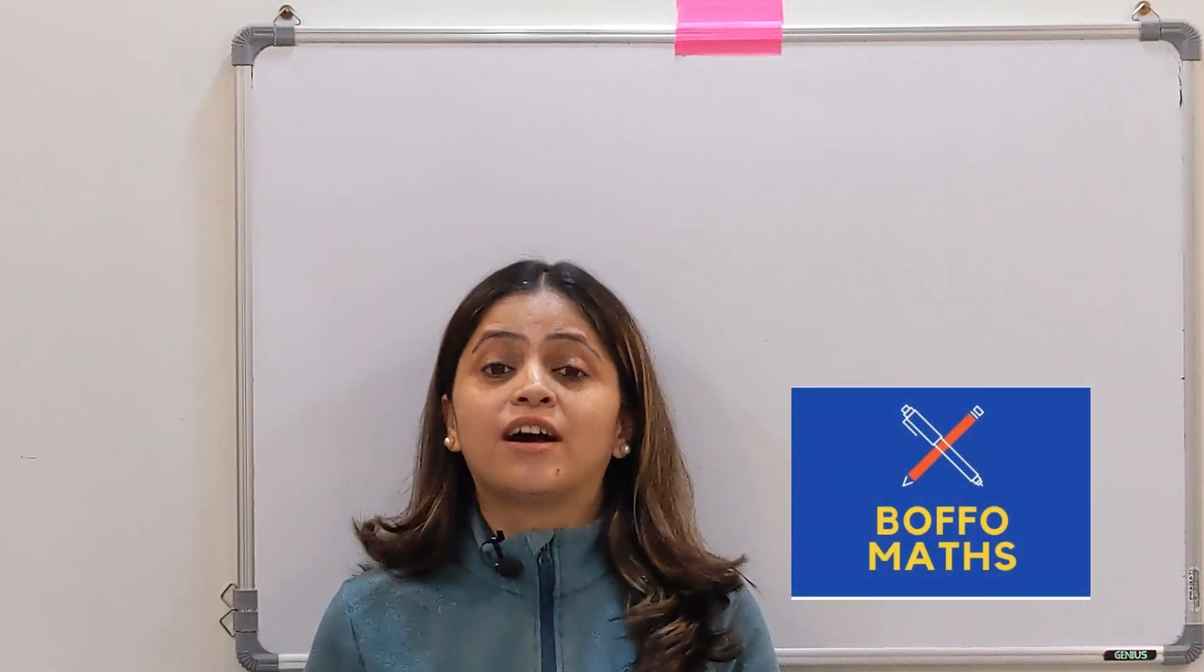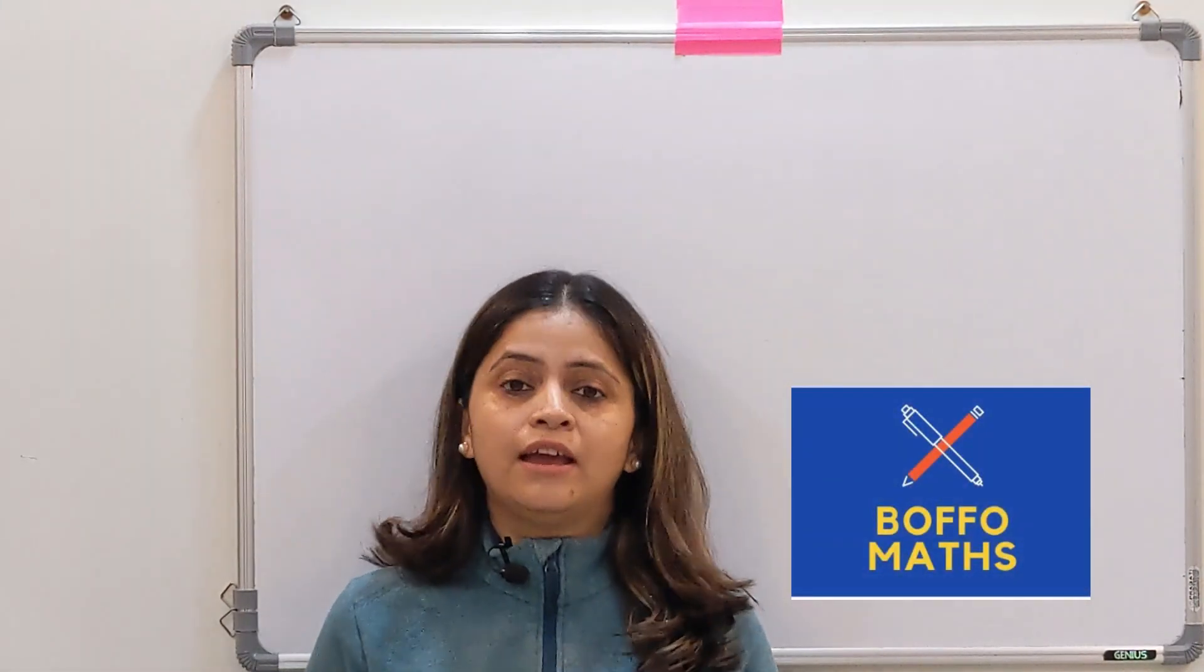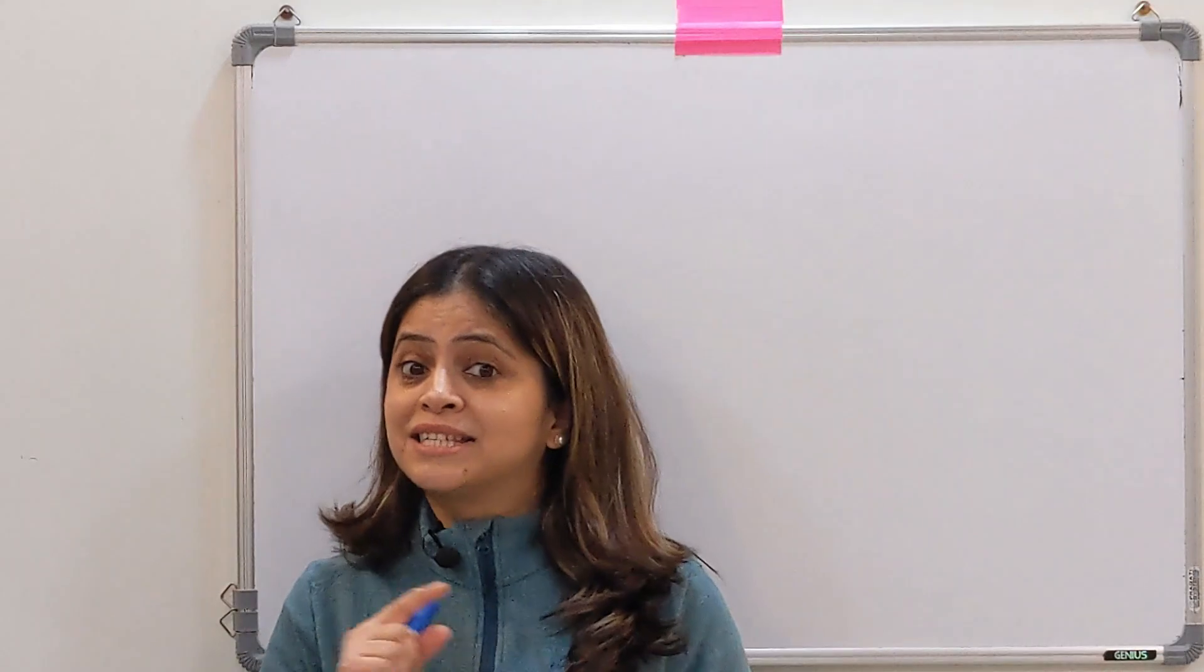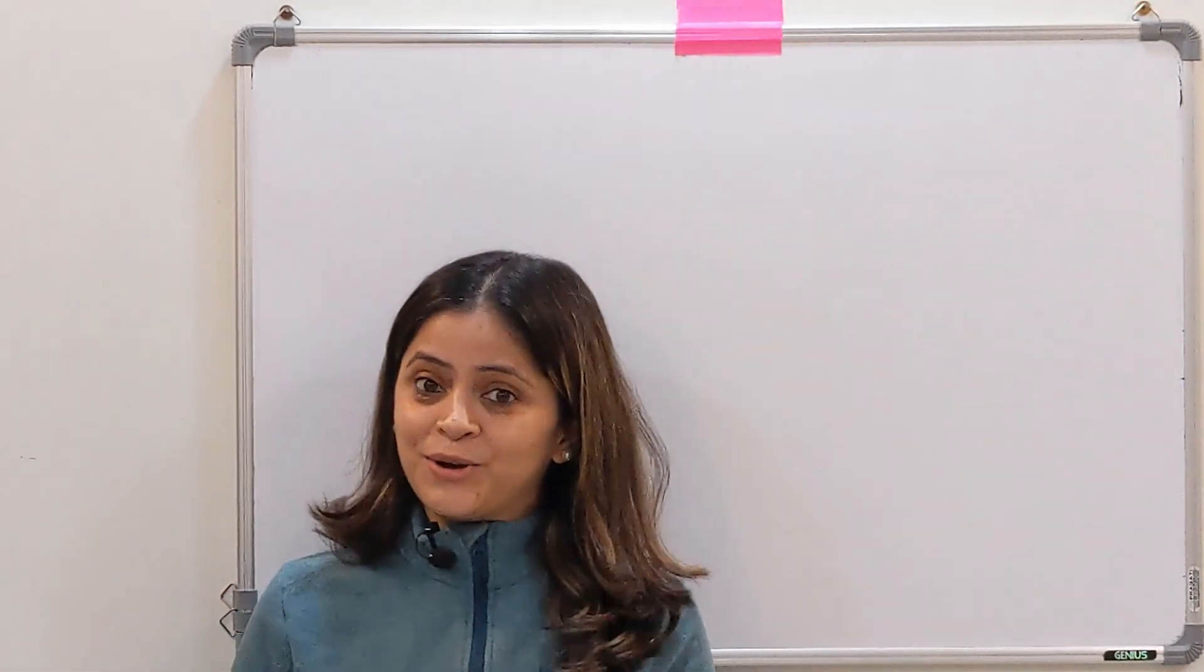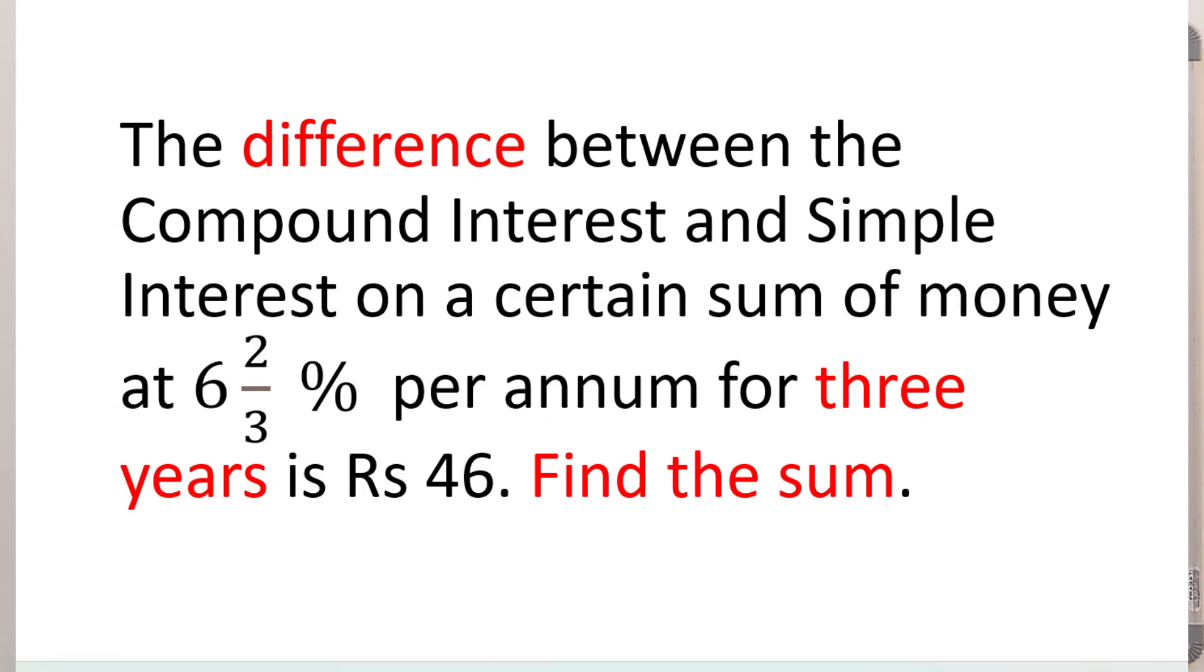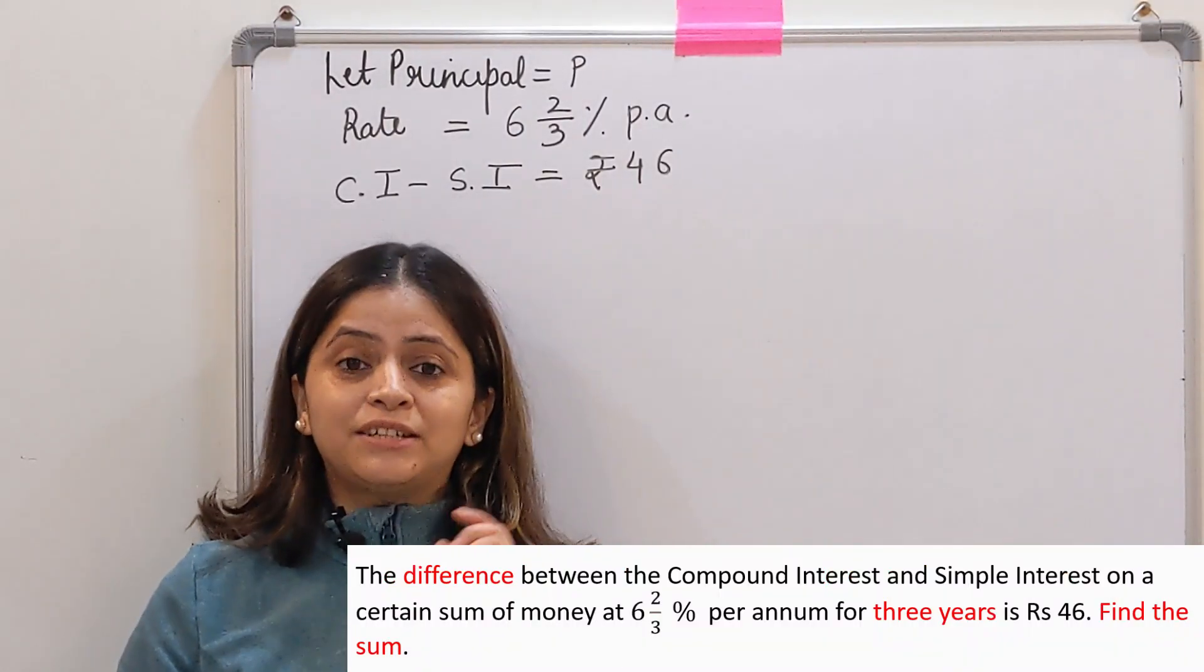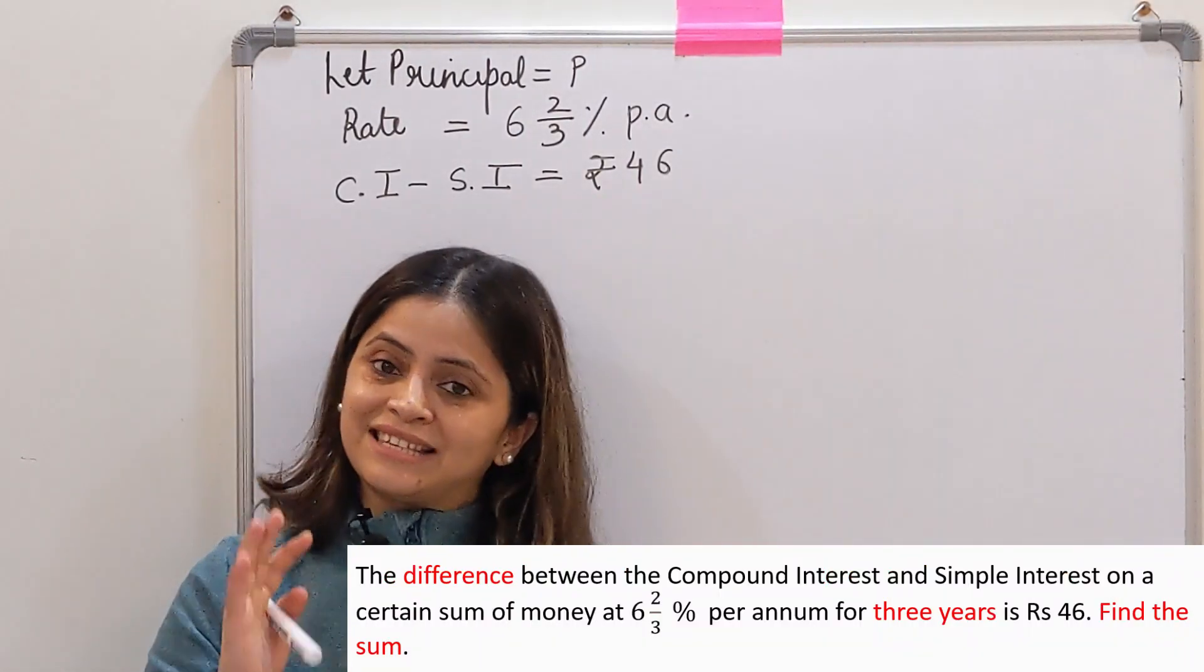Hello everyone and welcome to my YouTube channel Bofo Math. I am Neha and today we will discuss a question where we have compound interest, simple interest, and we will be finding the principal. The difference between the compound interest and simple interest on a certain sum of money at 6⅔% per annum for three years is Rs 46. Find the sum.